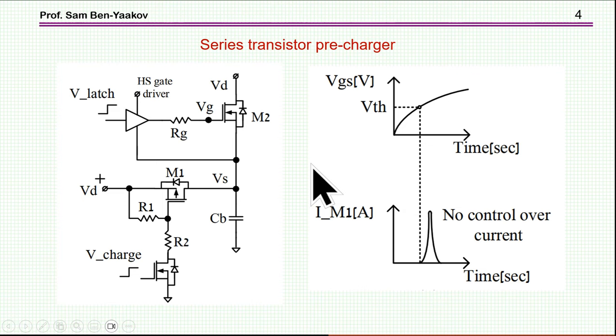We cannot have just any current with any voltage on the transistor. We have to be below these lines. Now, one area, for example, that this could be of concern is the circuit for pre-charging a capacitor. If we are to connect a capacitor to a voltage, this is the main switch. We cannot just turn it on because then we are going to have a very high current. It could be damaging. So we have to turn it on slowly, and we can do it by a circuit like that.